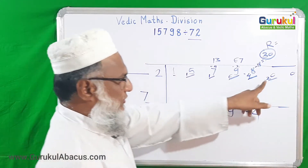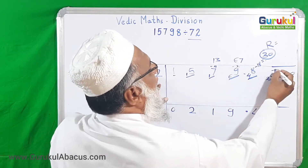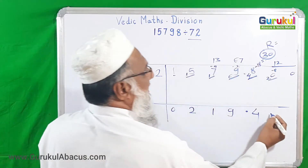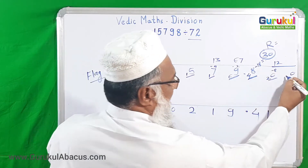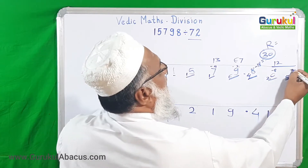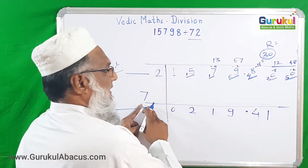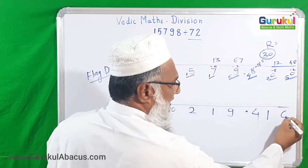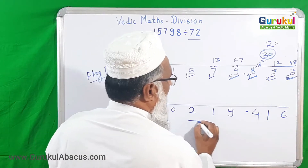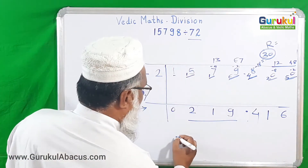Subtracting 28 from 30, remaining 2, added with the next zero gives 20. From 20 we subtract the product of 4 and 2: 4 times 2 is 8, so remaining 12. 7 ones are 7; 12 minus 7 gives 5, so we have 50. From 50 subtract 1 times 2 equals 2, giving 48. Then 7 sixes are 42. So the answer is 219.416.